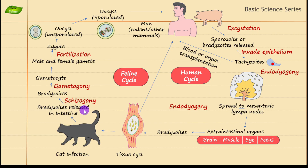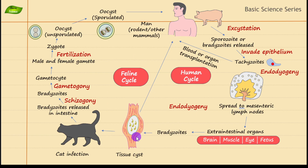We'll discuss the human cycle and the cat cycle, which is the feline cycle, including schizogony, gametogony, and the human stages. We'll create this entire illustration and try to make it as accurate as possible. Please support our channel by watching the entire video, hitting the like button, and subscribing.